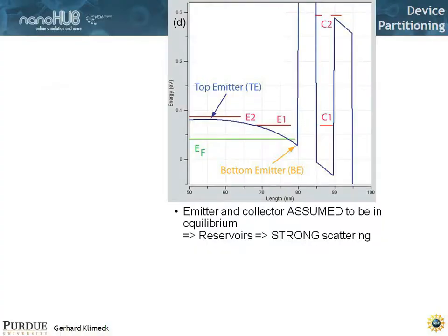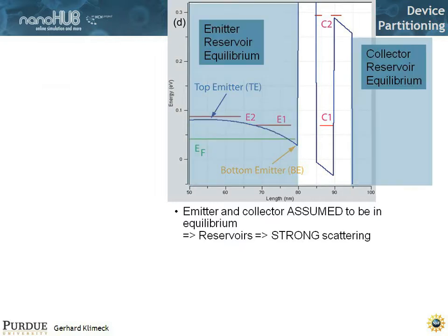There's another concept that you really have to understand. How is this being done? And the way it's being done, it's really by device partitioning. We divide the device into three regions. First of all, we take this emitter as a reservoir and we treat it in equilibrium.